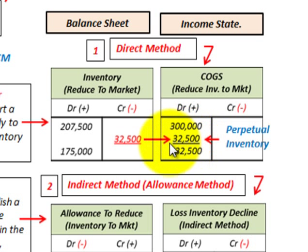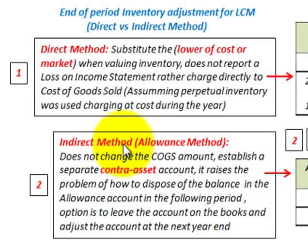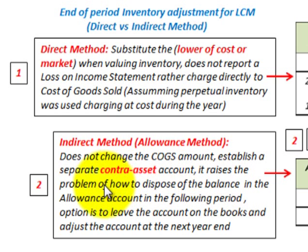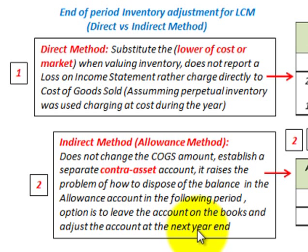Because we haven't been charging enough to our cost of goods sold on our inventory for the period, we increase our cost of goods sold from $300,000 up to $332,500. Now let's look at the indirect method, or the allowance method. This does not change the cost of goods sold amount — it establishes a separate contra-asset account, but it raises the problem of how to dispose of the balance in this allowance account in the following period.